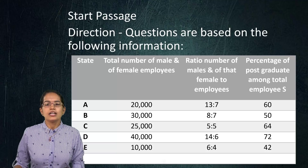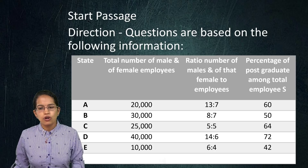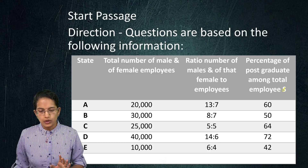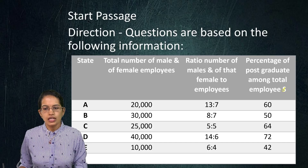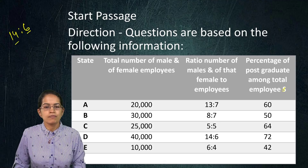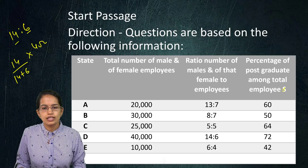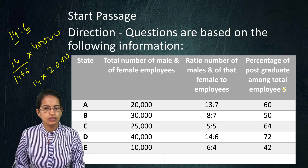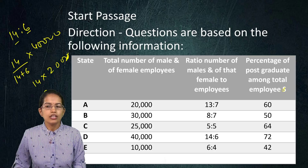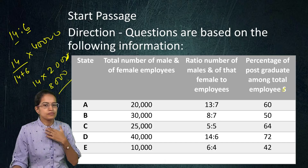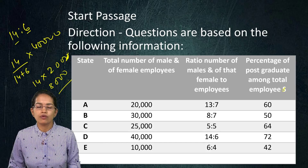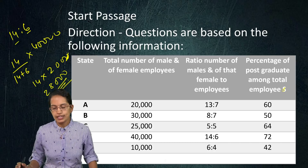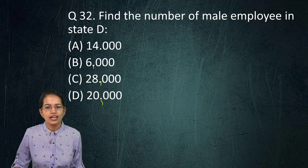The next question gives total employees with male-to-female ratios and percentage of postgraduates per state. For state D — total employees is 40,000, male-to-female ratio is 14:6. Male employees = (14 ÷ 20) × 40,000 = 14 × 2,000 = 28,000. So 28,000 is the right answer.